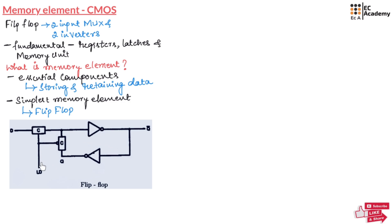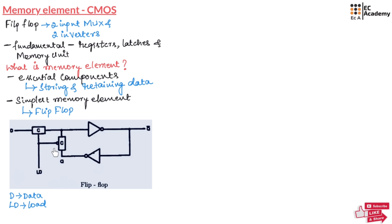Take a look at this figure which shows our flip-flop circuit. Here we have an input labeled D, which is the data we want to store. There is a control signal called LD, which represents load, and it determines whether we write new data or hold the current state. This circuit consists of a two-input multiplexer — one input is data and one input is load — and this multiplexer is designed using NMOS and PMOS. It also consists of two inverters, and these inverters are connected in a feedback loop.